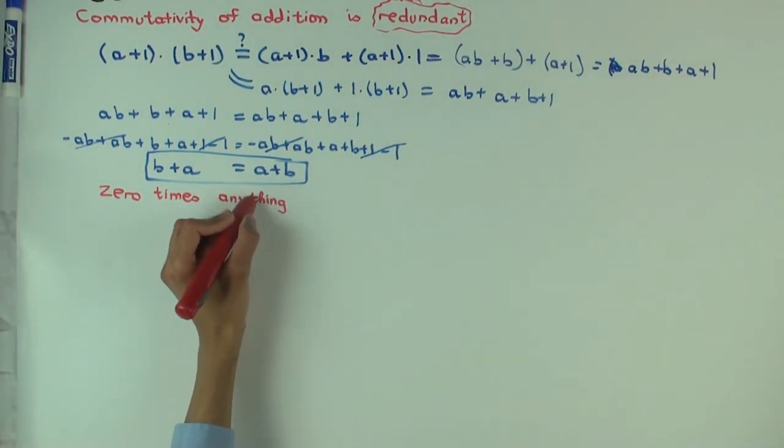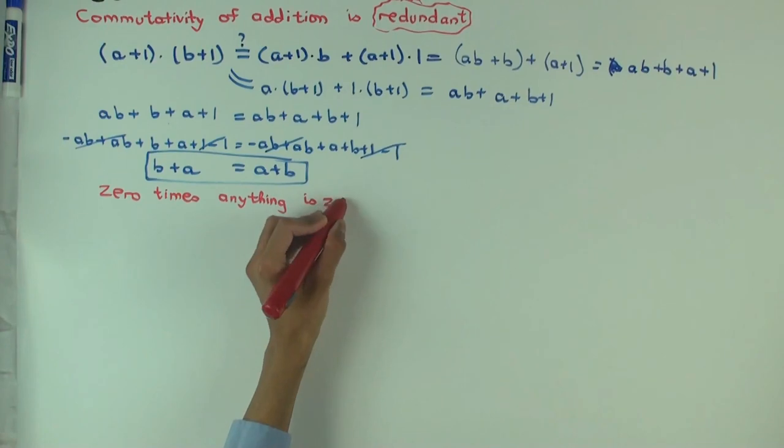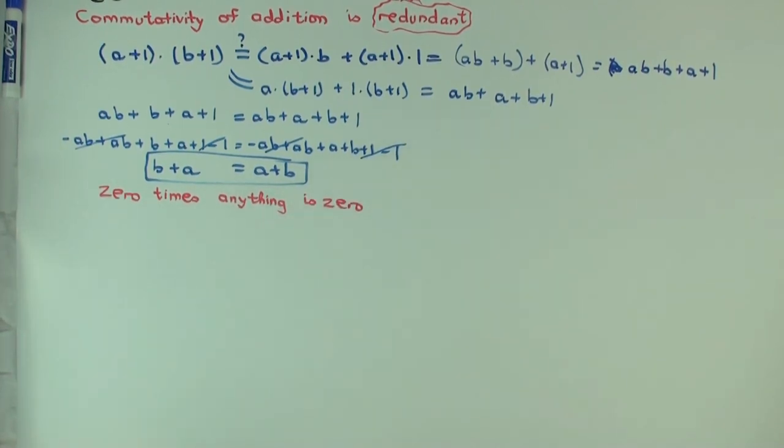So let's try to show that zero times anything is zero. So the zero is a zero for multiplication where we usually think of it. Now, that's not totally obvious, right? Because how zero is defined is defined as the identity for addition. But now what we are saying is that it's a nil for multiplication. It destroys stuff when you multiply by it.